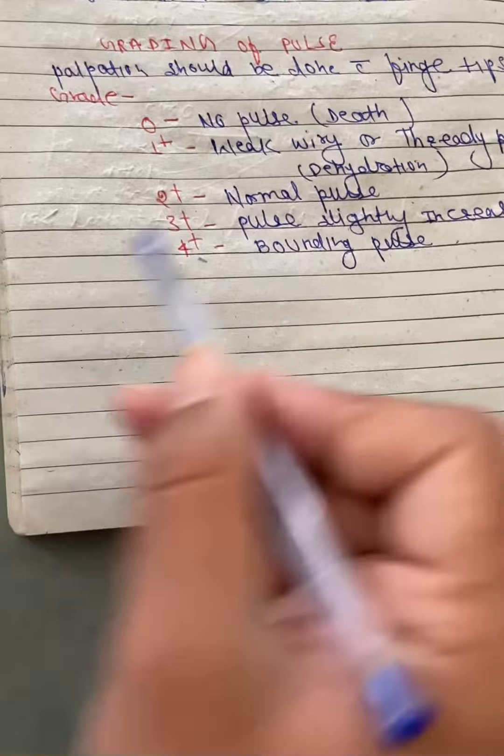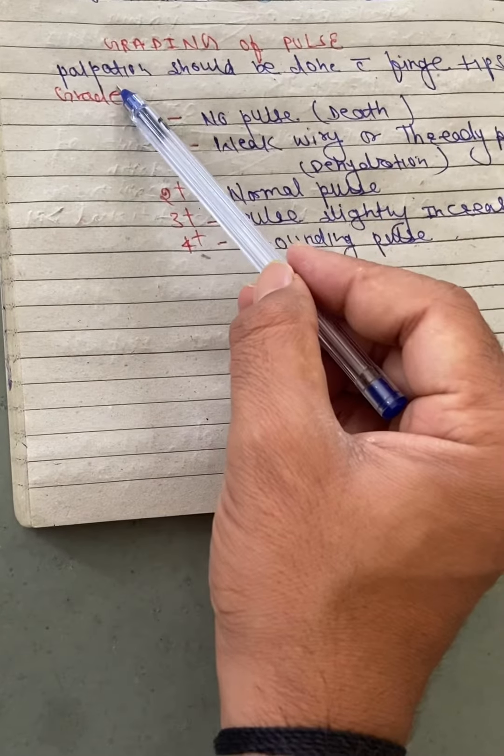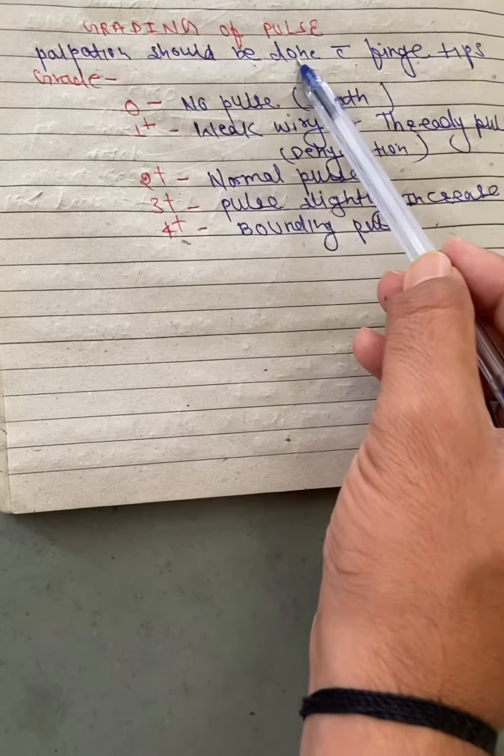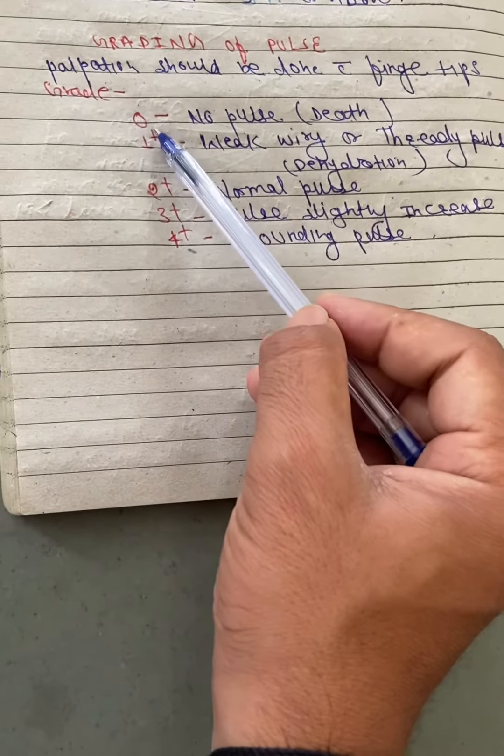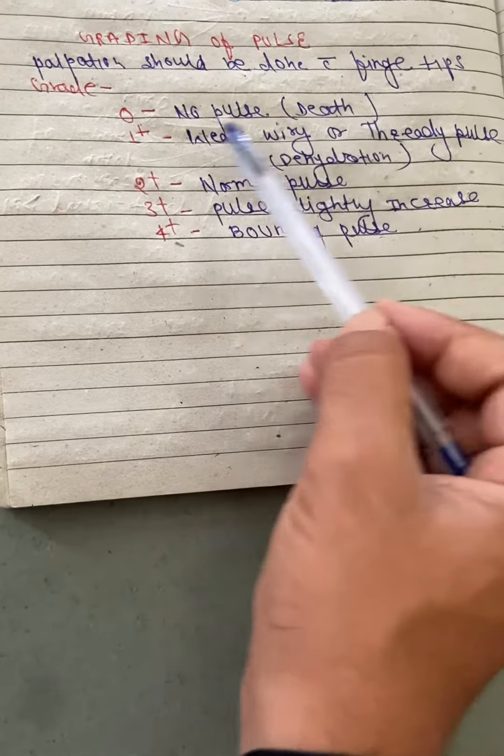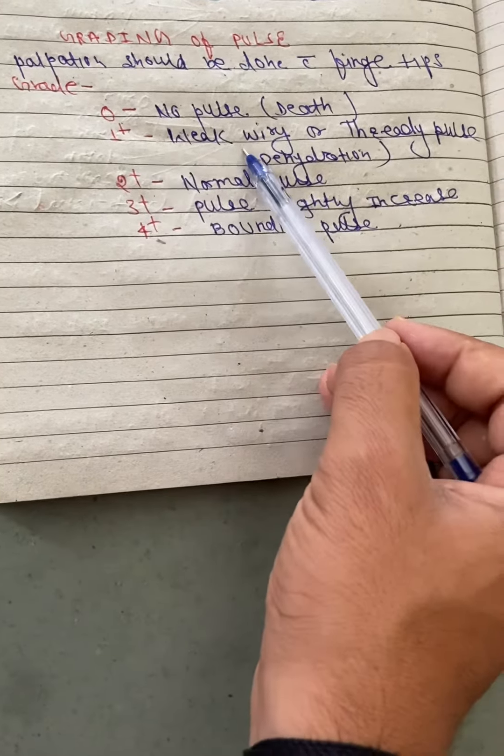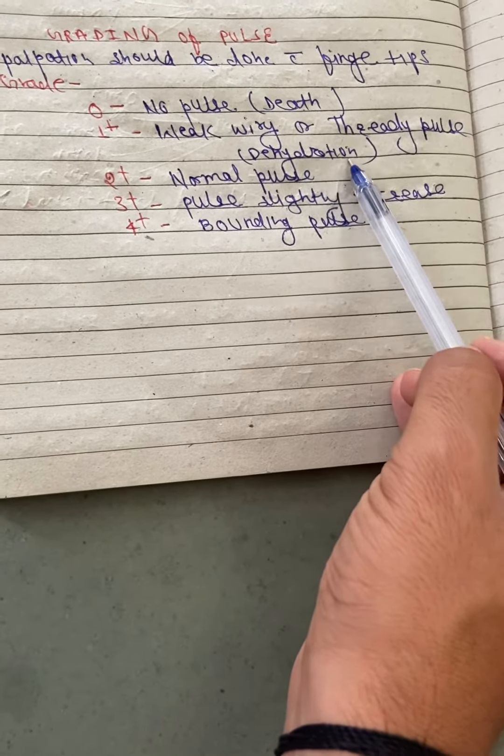Let's review once again. Grading of Pulse: Pulse palpation is done with fingertips. Grade 0 means pulse is absent, like in death patients. Grade 1 Plus is weak, wiry, and thready pulse, seen in dehydration patients.